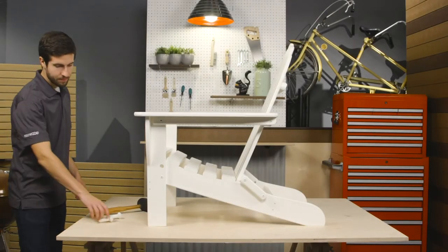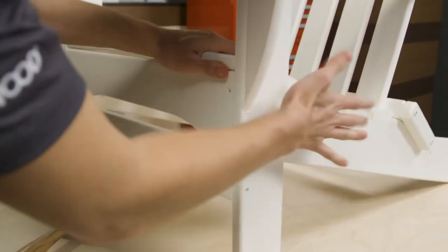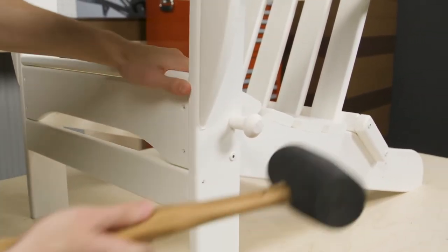Finally, insert the Adirondack pins into the seat of the chair. You can use a soft mallet to tap the pins into place.